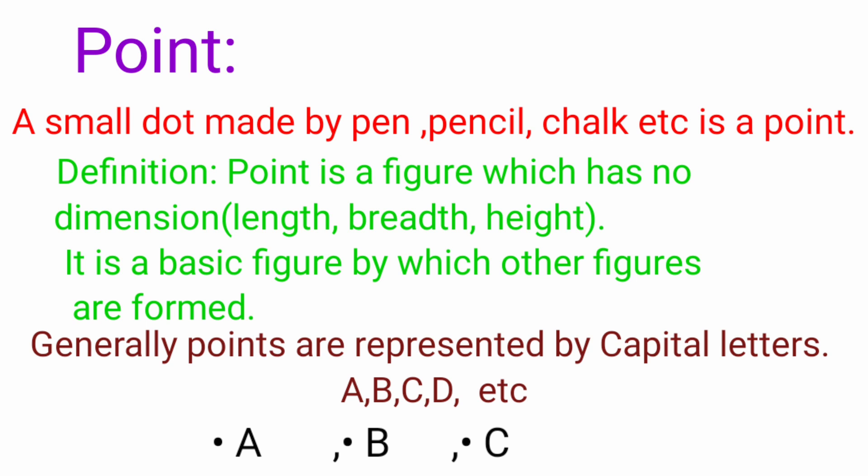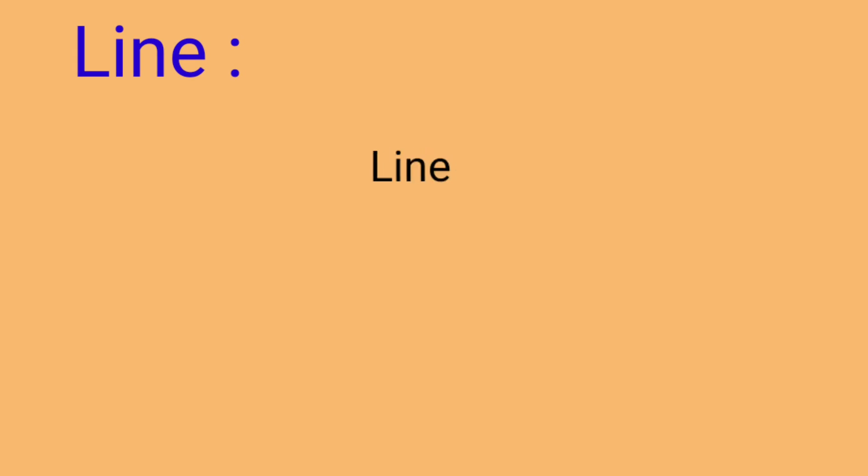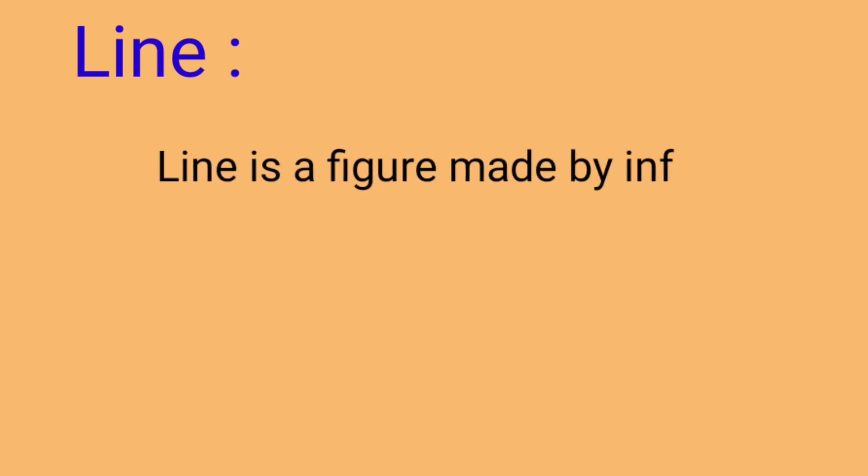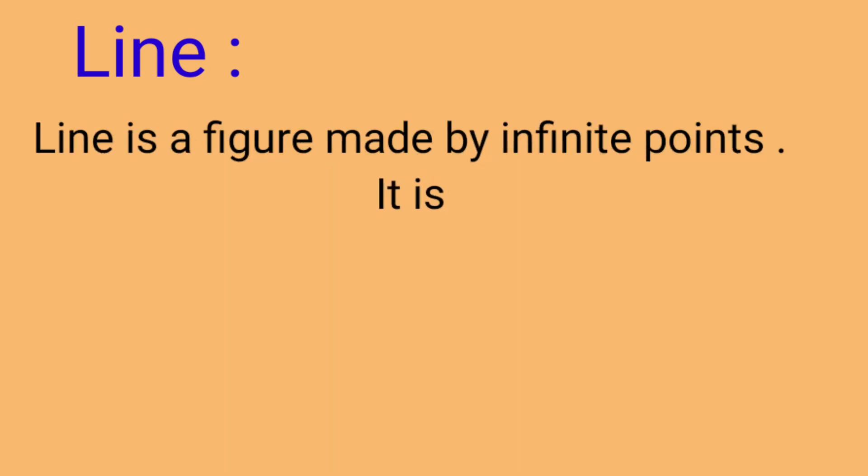Pen, pencil, ya chalk ke nishan ko hum point kehte hain. Point ki koi dimension nahi hoti hai — koi length, breadth, height nahi hoti hai. Ye basic figure hoti hai jiske zariye se dusari figures banti hain. Point ko hum capital letters A, B, C, D se zahir karte hain.